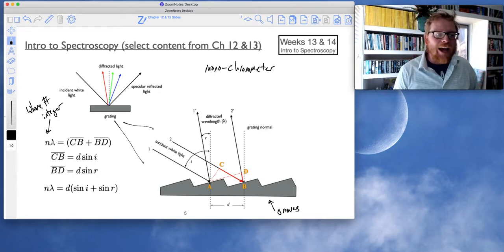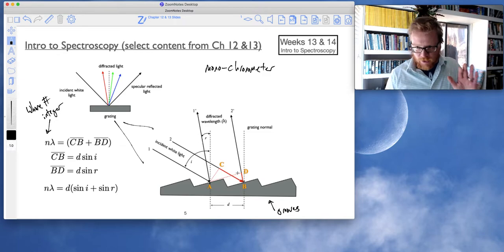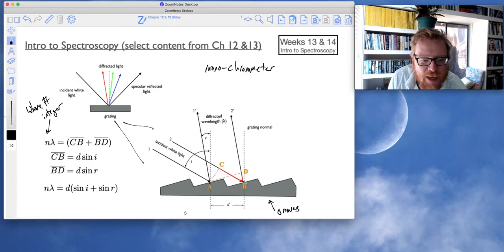But as long as it's a whole number integer of the wavelength in question, and particularly the CB plus BD length. So, this gets into just geometry. It's a geometrical derivation. But the way this works, the C plus B and B plus D distance must be some integer wavelength.